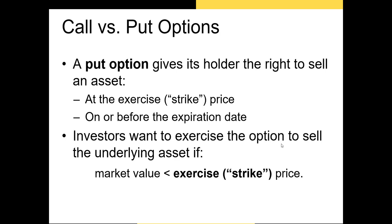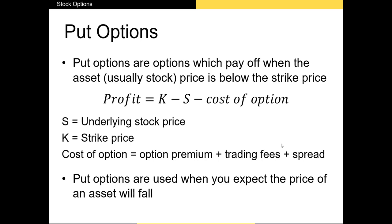The other type of option is a put option. A put option gives its holder the right to sell an underlying asset at a set strike price on or before the expiration date. This option is purchased by investors who want to ensure they'll be able to sell an underlying asset at no less than a specific price — it's one of our best hedges against downside risk. The profit on a put is: strike price minus the underlying stock price minus the cost of the option.